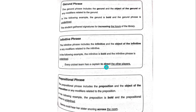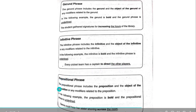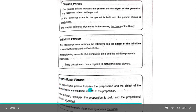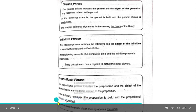'To direct' is the infinitive and the infinitive phrase is 'to direct the other players.' Prepositional phrase. The prepositional phrase includes the preposition and the object of the preposition or any modifiers related to the preposition. In the following example, the preposition is bold and the prepositional phrase is underlined. Example: 'Samra could hear her sister snoring across the room.'